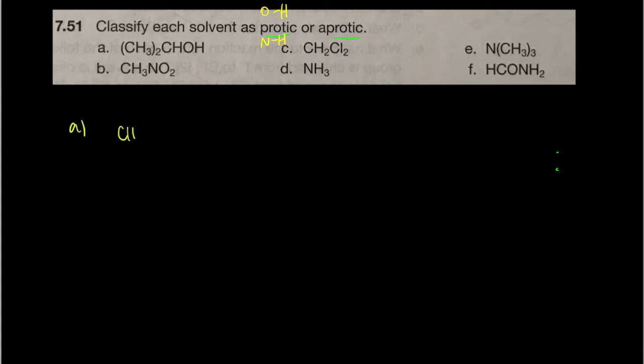It might be helpful to draw the Lewis structure or sketch it out a bit. So this one here is an alcohol, and alcohols are all classified as protic solvents because of that bond right there. We would call this protic.